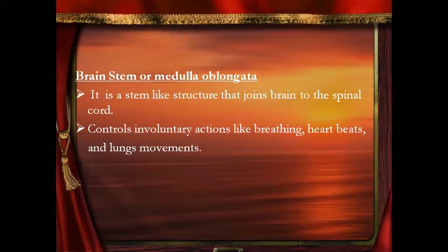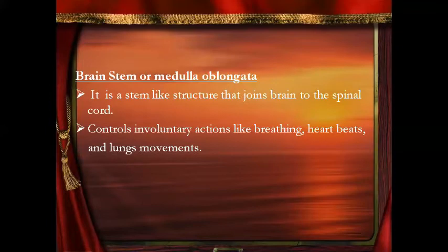The brain stem or the medulla oblongata is a stem-like structure that joins the brain to the spinal cord. This brain stem controls the involuntary actions. Involuntary actions are those actions which are not under the control of the brain — for example, breathing, heartbeats, and the movements of the lungs.